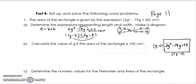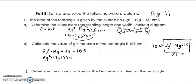So I can label this into the diagram: g minus 5 looks like it's going to be the smaller one, so I'll put it here as g minus 5. And 2g minus 9 is going to be my base. Part b asks me to calculate the value of g — I'm going to find out the value of g if the area is 105. So I'll set this up: 2g squared minus 19g plus 45, and this time it's equal to 105. To solve polynomial equations, bring everything to one side: 2g squared minus 19g minus 60 equals 0.